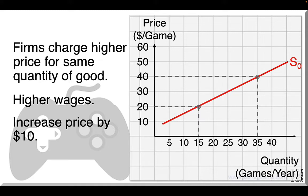They will thus try to sell each game at a higher price. Where before they charged $20 to sell 15 games, they will now charge $30, 20 plus 10. And where before they charged $40 to sell 35 games, they will now charge $50, 40 plus 10. We could do this for a bunch of other prices, but you get the idea. Any quantity that video game producers were willing and able to sell will now be sold at a price that has increased by $10.